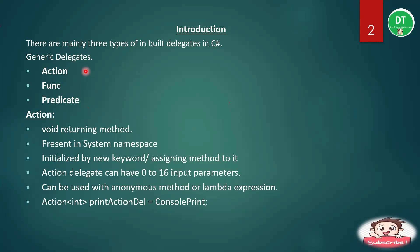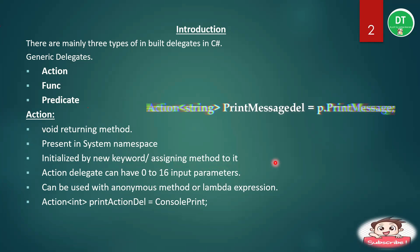The Action delegate is used for calling a method that returns void — that is, which does not return any value. It is present in the System namespace and it is initialized using the new keyword, after which we assign a method to it. Similarly to how we create an object of a class, we create an object of the delegate. Alternatively, we can directly assign a method to a delegate variable.